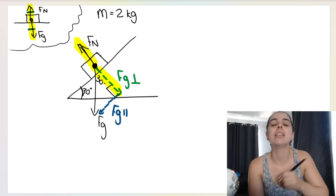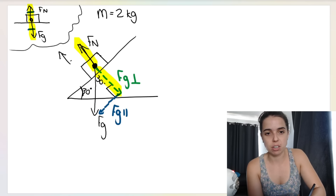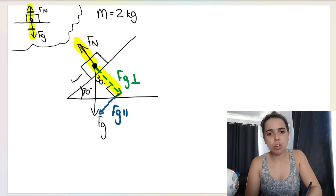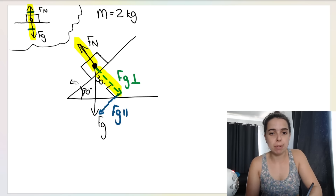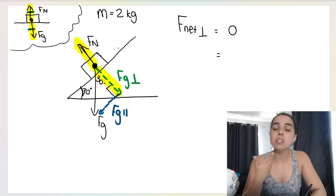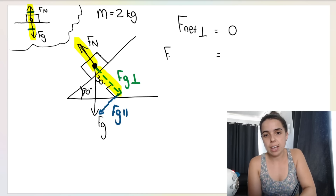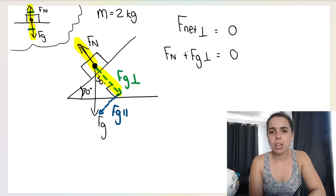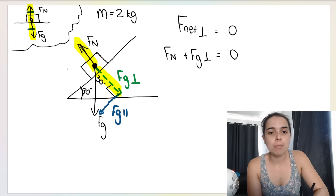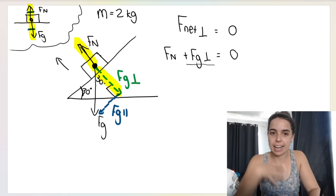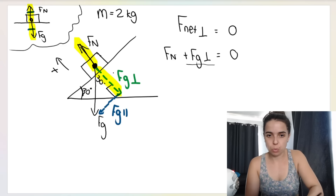However, FN and FG perpendicular are along the same plane — think of it as the Y-axis tilted. These are the perpendicular forces: all forces acting 90 degrees to the surface. Both FN and FG perpendicular act at 90 degrees to the surface. Just as before, the box will not move in the perpendicular direction — it may slide down or be pulled up the slope, but not in the perpendicular direction. So F net in the perpendicular direction is zero.